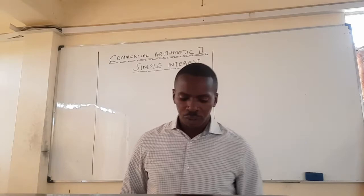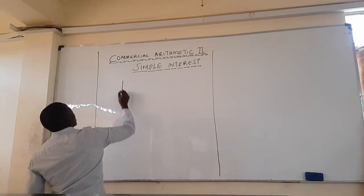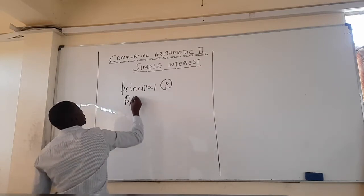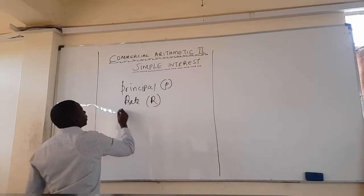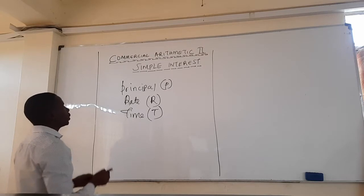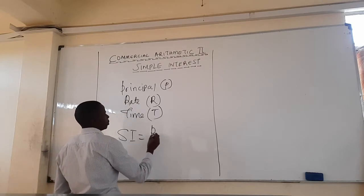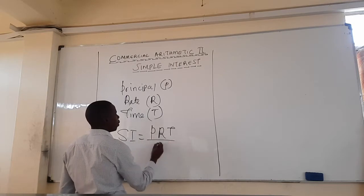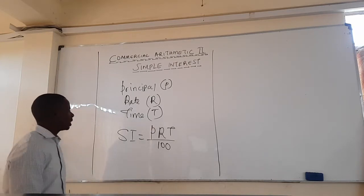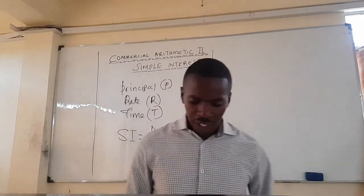Now let's see how we calculate simple interest. We have the amount borrowed, called the principal P, the rate R, and the time for which you borrow the money, abbreviated as T. The formula for getting simple interest is: Simple Interest = P times R times T, all over 100.